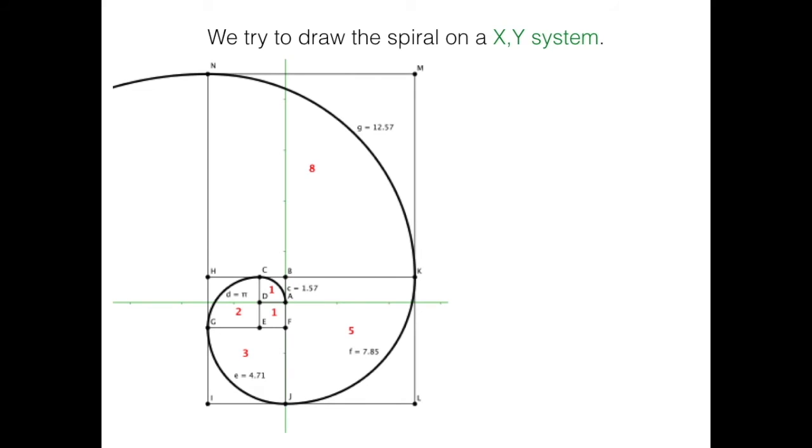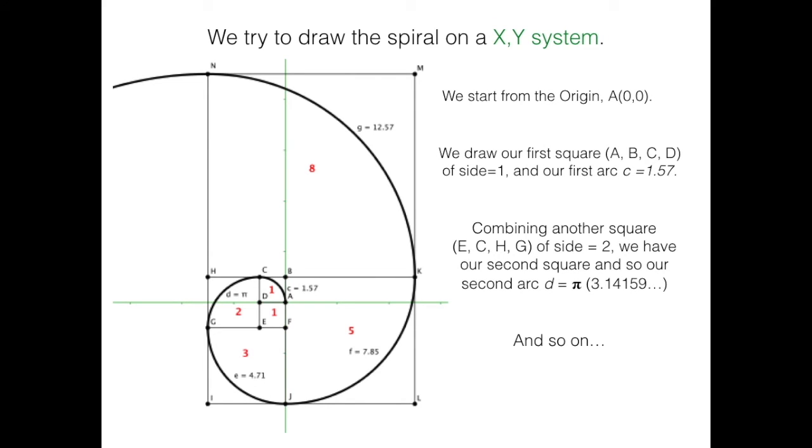We try to draw the spiral on an XY system. We start from the origin, A. We draw our first square of side 1, and our first arc, C, which equals 1.57. Combining another square of side 2, we have our second square, and so our second arc, D, equals pi, and so on.